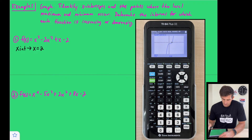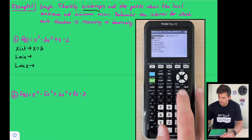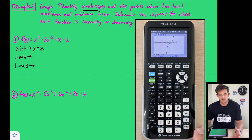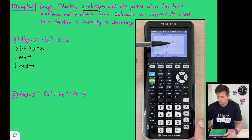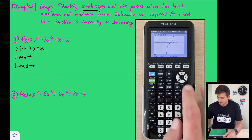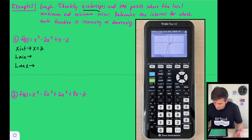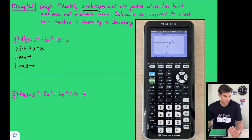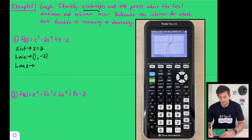Now we want to locate the local minimum and local maximum. Go to second trace and choose minimum. Just like with the x-intercept, place the cursor to the left of the local minimum, hit enter, then to the right, and hit enter again. The calculator gives approximately x = 0.9999999 and y = −2. We'll round and say x = 1, so the local minimum is (1, −2). The calculator sometimes goes back and forth on that value, but it is x = 1.